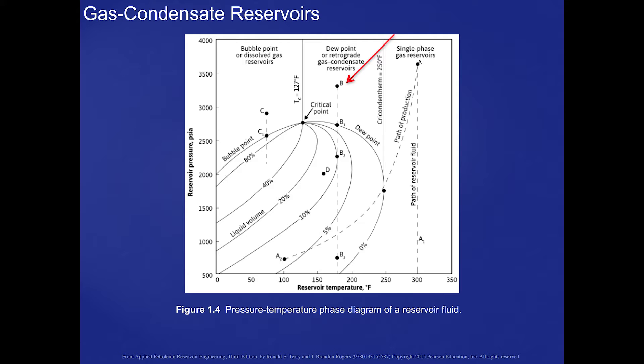and then as the pressure is decreased during the production, it will reach what's called a dew point on this diagram. And this is why the reservoir is referred to as a retrograde reservoir.